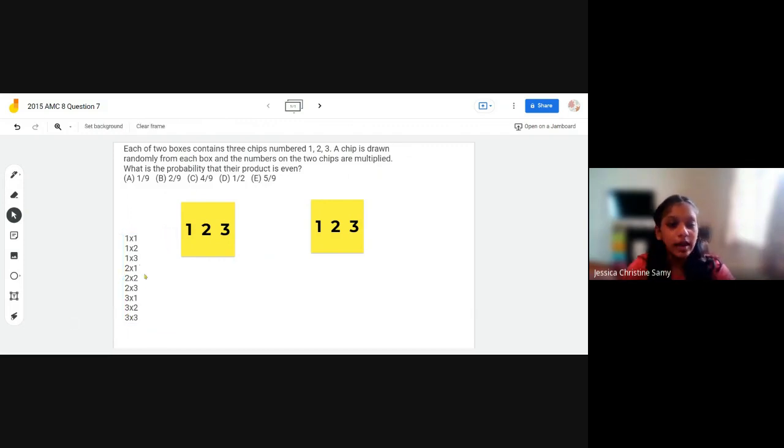So now we have to find out which of these will give us an even product. 1 times 1 won't give us an even product but 1 times 2 will. 1 times 3 will give us an odd product but 2 times 1 will give us an even product and so will 2 times 2 as well as 2 times 3. And 3 times 1 won't give us an even product and 3 times 3 will not give us an even product.